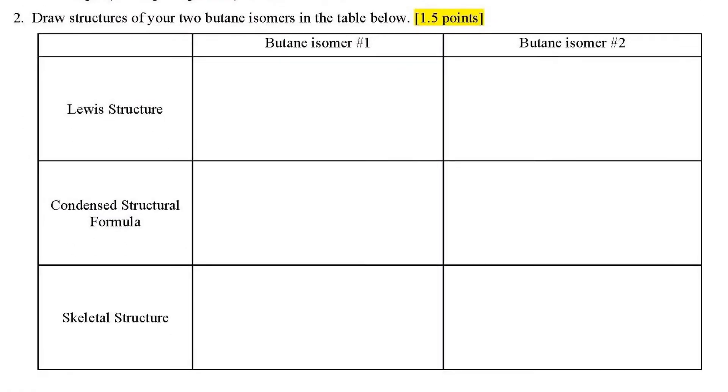Now you can answer question number two and find the other isomer of butane, C4H10, and draw the Lewis structures, condensed structural formulas, and skeletal structures of both isomers.